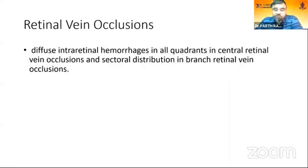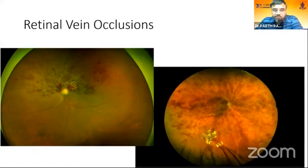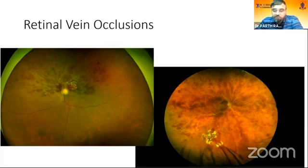In retinal vein occlusions, there will be diffuse intraretinal hemorrhages in all quadrants in central retinal vein occlusion, and a sectoral distribution in branch retinal vein occlusion. These are ultra-wide-field images: the left image shows branch retinal vein occlusion, and the right image shows the tomato splash appearance in CRVO.